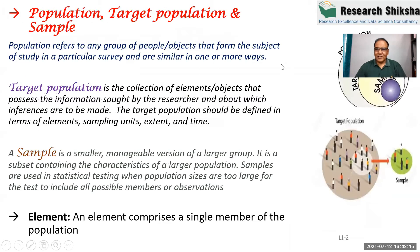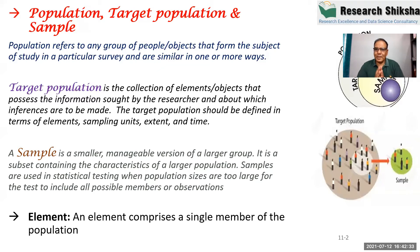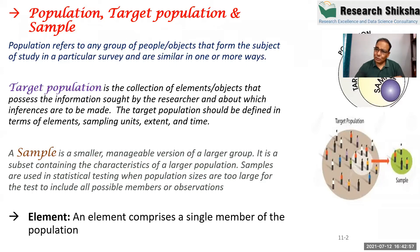I'm going to start the session. My session is divided into two parts. The first part is sampling methods and the second part is sample size determination. The first rule of sampling is that we collect the sample and examine the hypothesis. In this process, we take the data from the sample, but we examine the hypothesis for the population. We study the sample, but conclude for the population.